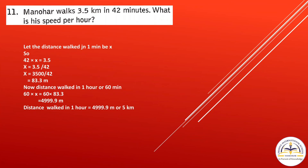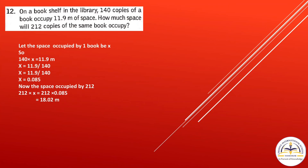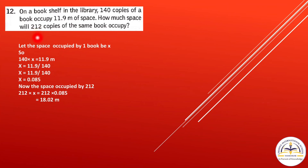Question 12: On a bookshelf in the library, 140 copies of a book occupy 11.9 meters of space. How much space will 212 copies occupy? Let the space per book be x: 11.9 divided by 140 equals 0.085 meters. Then multiply 212 by 0.085 to find the space occupied by 212 copies.